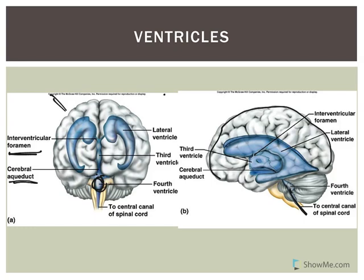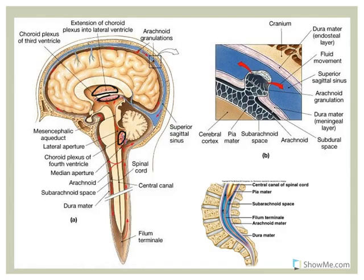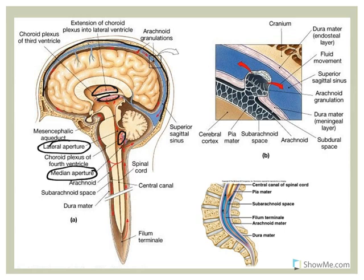From the fourth ventricle, CSF can go down to the central canal in the spinal cord, or it may go to the subarachnoid space via openings: one median aperture and two lateral apertures. The subarachnoid space is between the arachnoid mater and the pia mater. There is also a subarachnoid space in the spinal cord, along with the central canal.